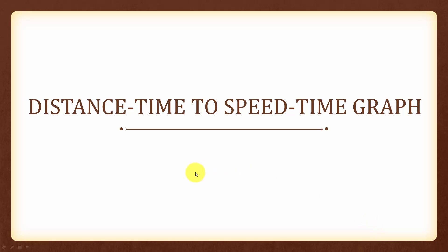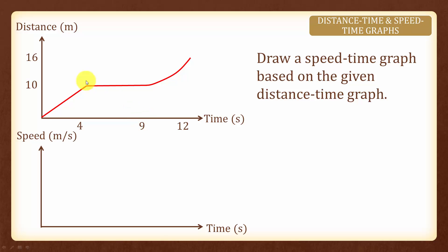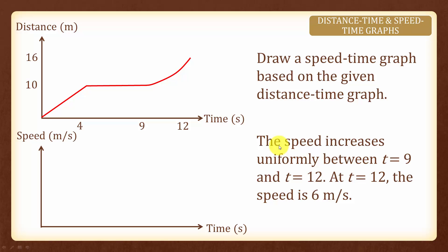Next, let us look at how to convert from a distance time graph to a speed time graph. In this example, we have a distance time graph with an upward sloping line followed by a horizontal line and then a concave line sloping upwards. We are asked to draw a speed time graph based on the given distance time graph. We are also given that the speed increases uniformly between t equals to 9 and t equals to 12, and at t equals to 12 the speed is 6 meters per second.